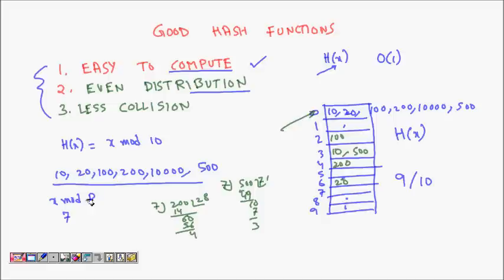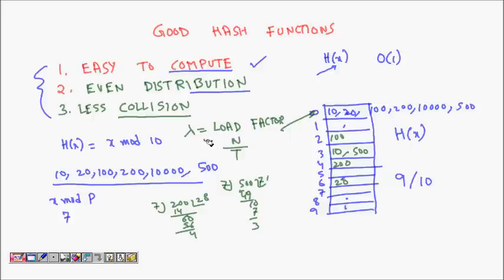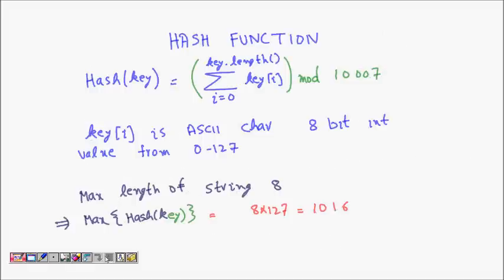The final quality is that it should not have many collisions. We call lambda the load factor. If the table size is t and you have n elements to insert, then lambda equals n divided by t. A higher load factor means you can expect more collisions. With these criteria in mind, let's look at some examples to see how good certain hash functions are, particularly for strings.